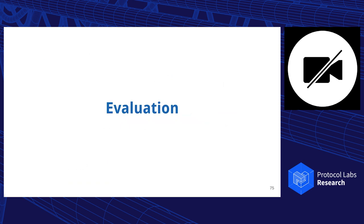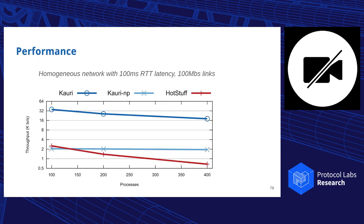We evaluated this on Grid 5000 with up to 20 physical machines and executed a number of different experiments. I'll quickly describe a small subset, which are the most significant ones. This particular experiment was executed with three different sizes of validator sets, namely 100, 200, and 400 in a setting of 100 millisecond round trip time and 100 megabit links. That's, for example, an inner Europe or inner US setting.